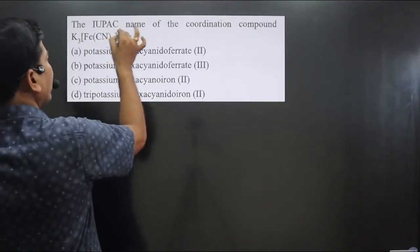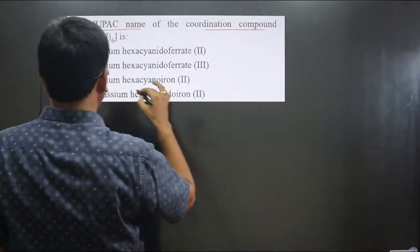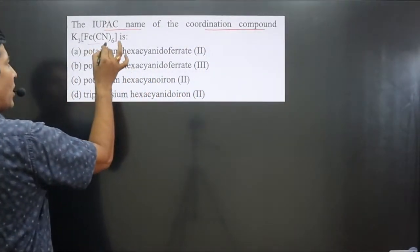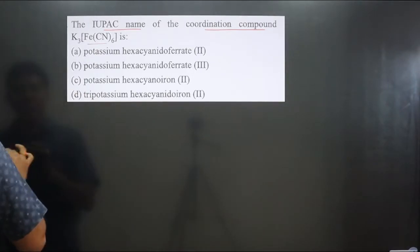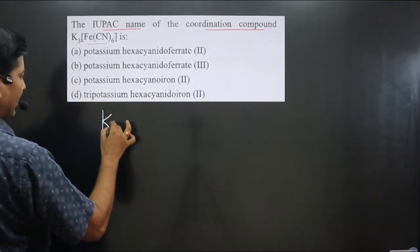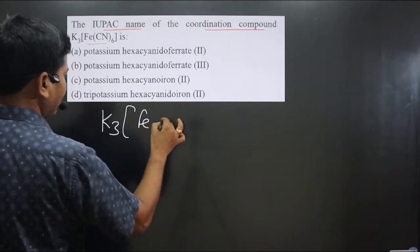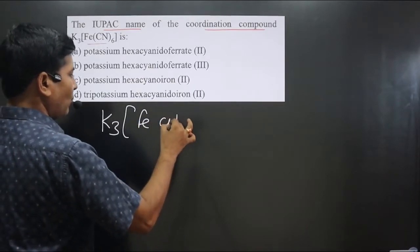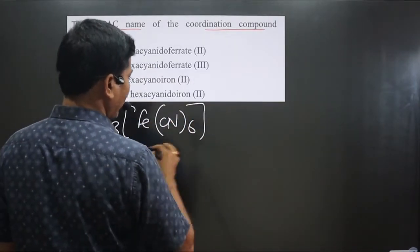The question asks for the IUPAC name of the coordination compound. The coordination compound given is K₃[Fe(CN)₆].